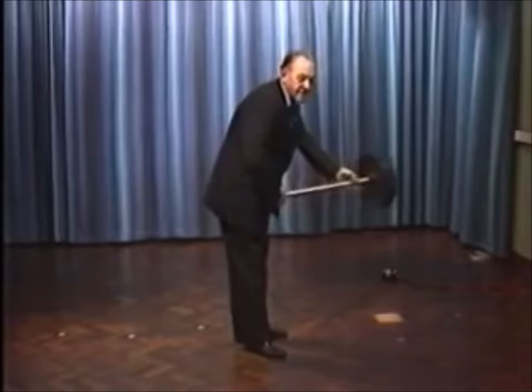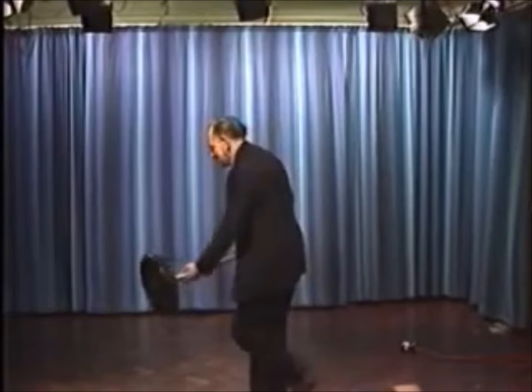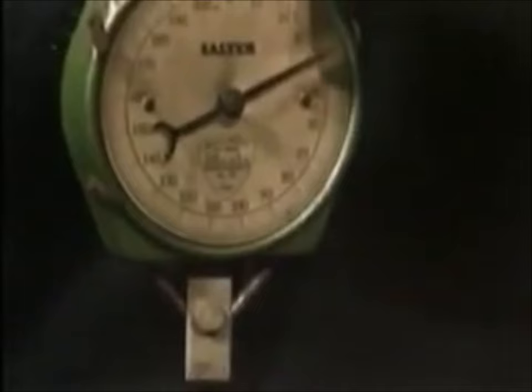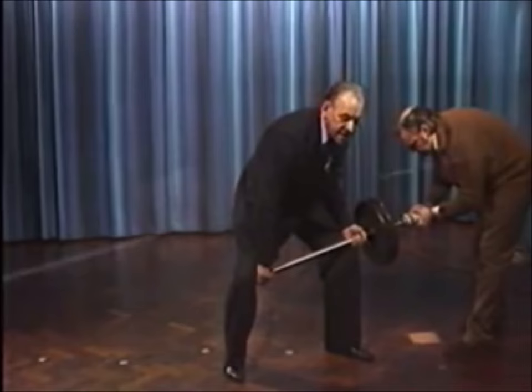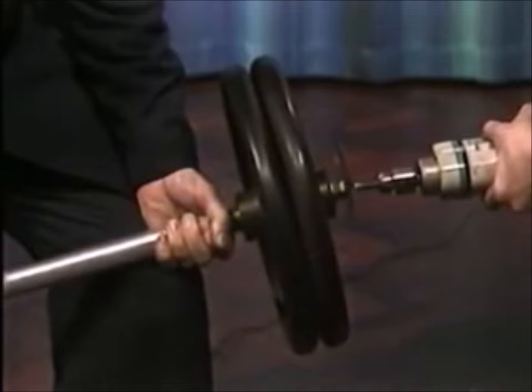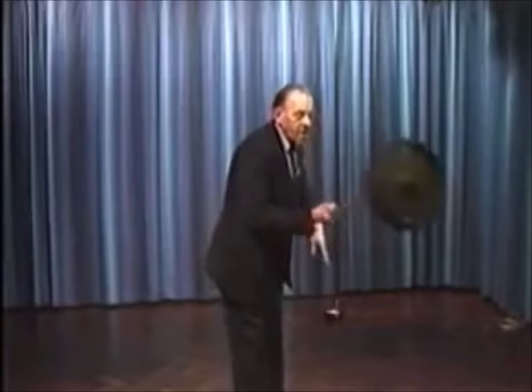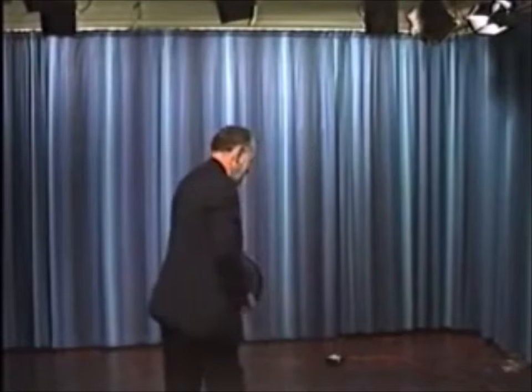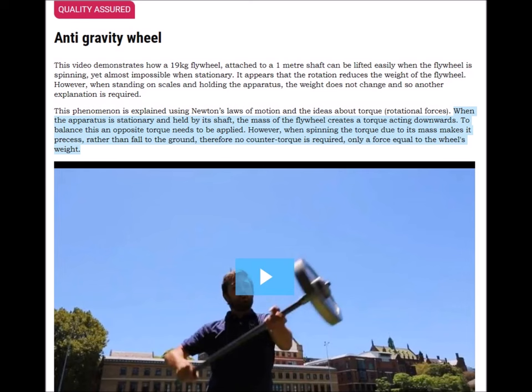Professor Eric Laithwaite, also known as the father of maglev, was one of the first people to conduct public demonstrations with gyroscopes. Laithwaite spun a flywheel weighing about 40 pounds, which he, prior to activation, had some difficulty in lifting above shoulder level with both arms. Yet when spinning it at 2,500 RPM, the flywheel at the end of a three-foot-long shaft could be easily raised overhead with only one arm and a fluid lifting movement.